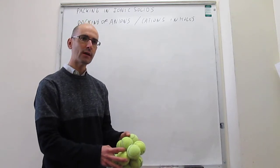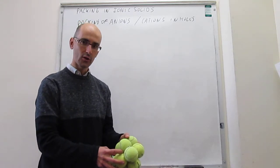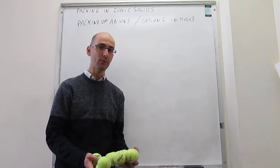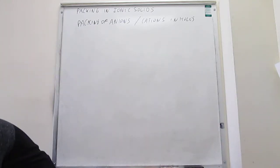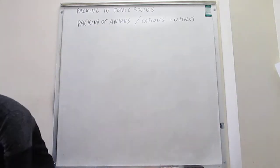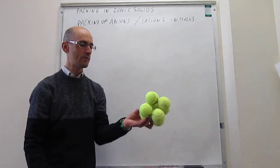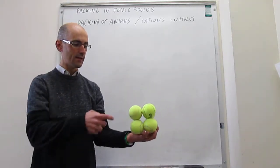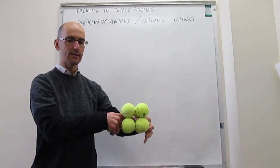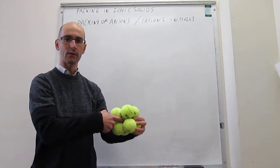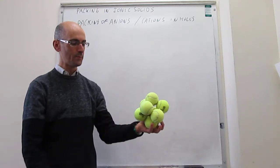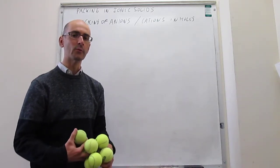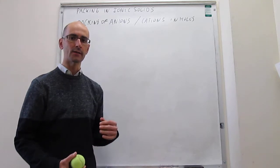Now, if we think about non-closest-packed lattices — for example, if we take a simple cubic lattice — there's actually only one type of hole. That is within the unit cell, and that hole is just going to be in the middle of the cube. So these are the three types of holes we're going to be worrying about for our unit solids.